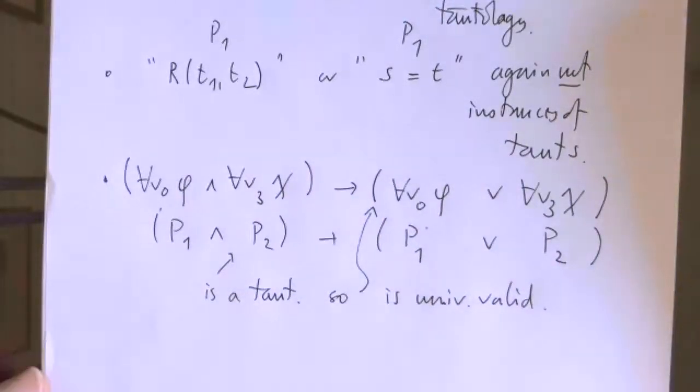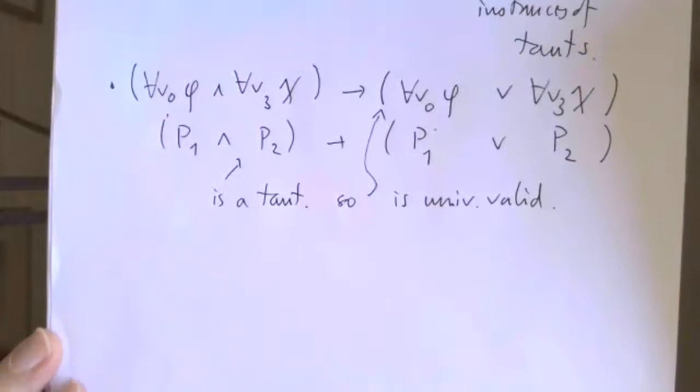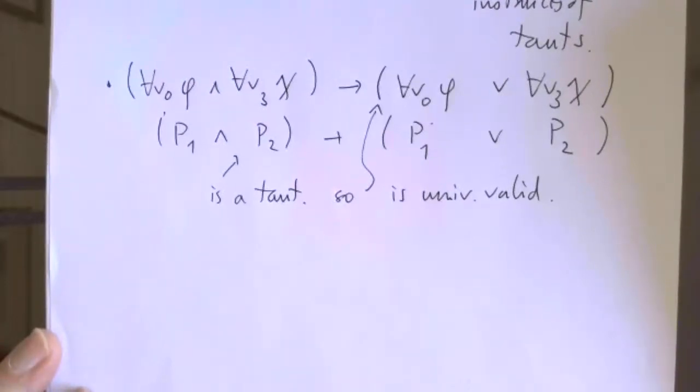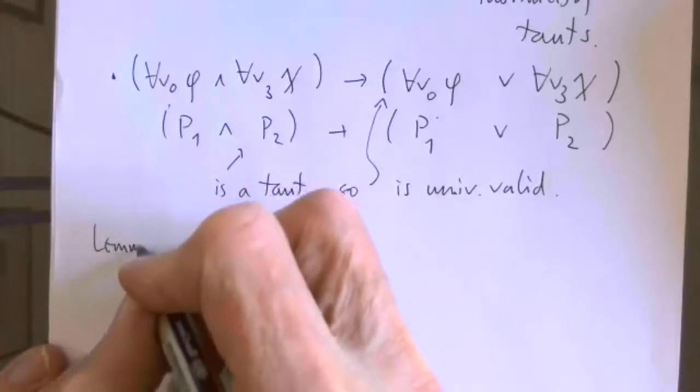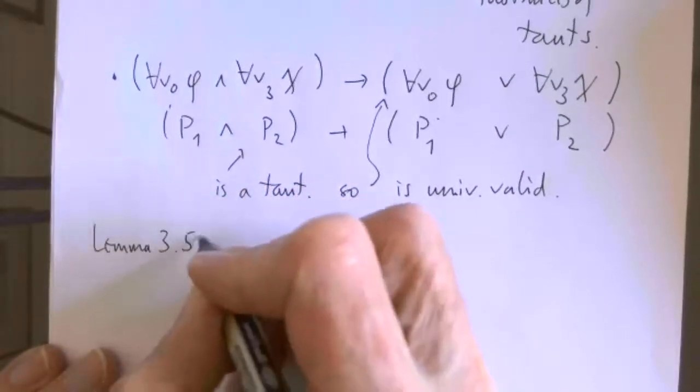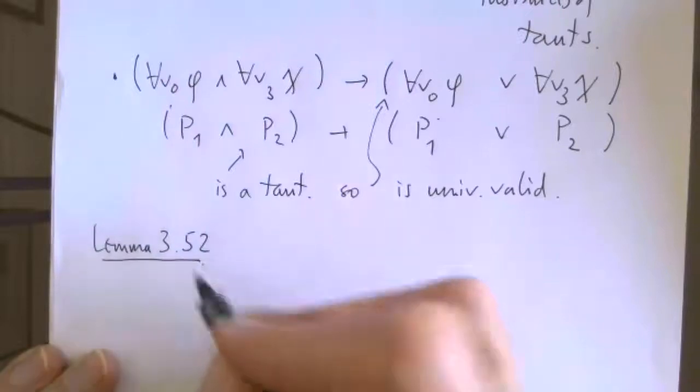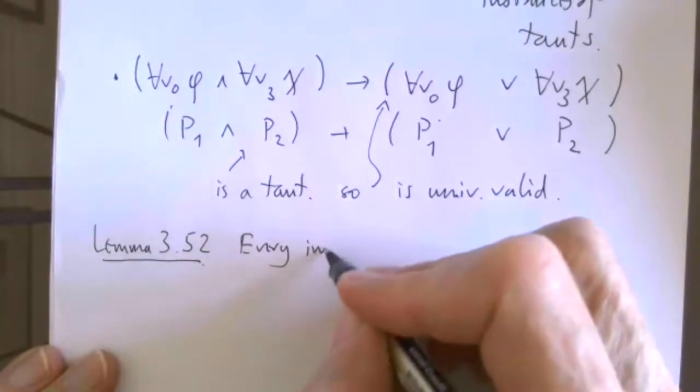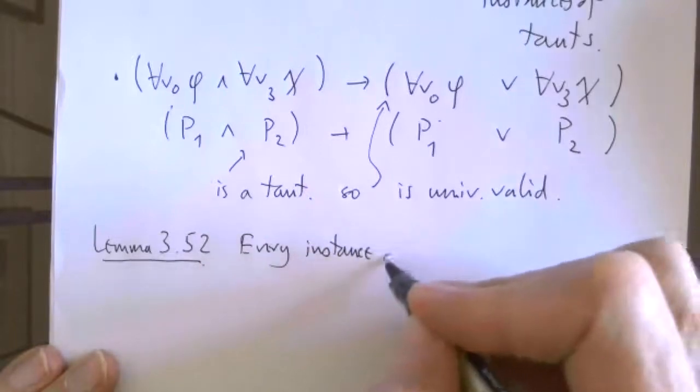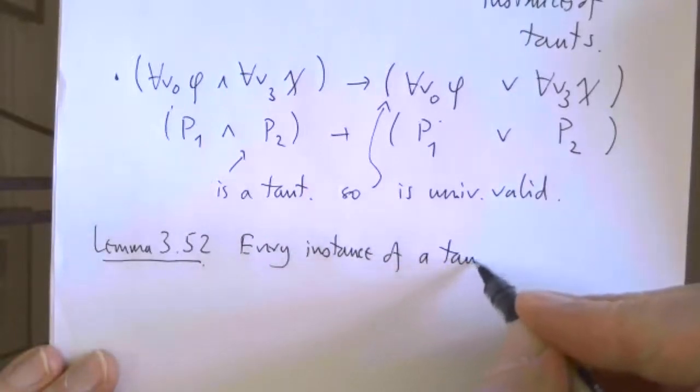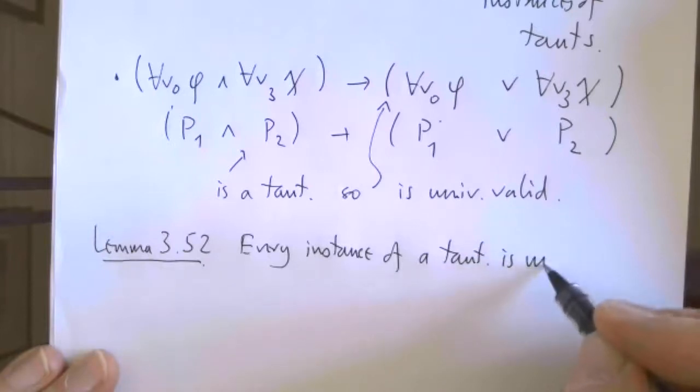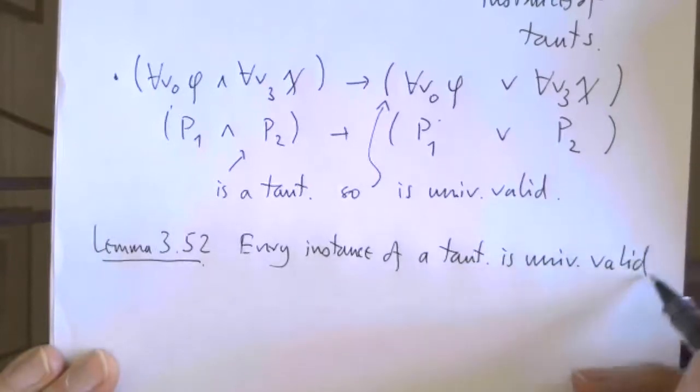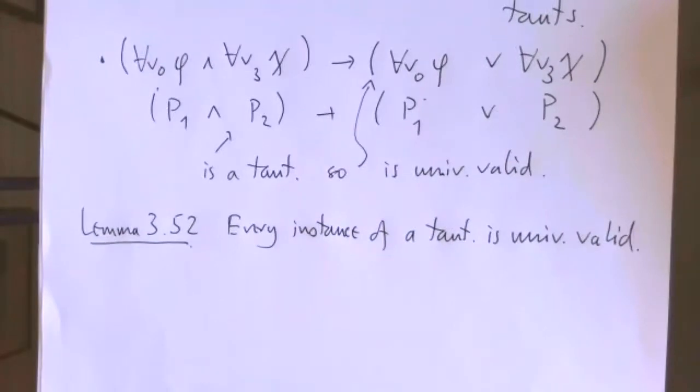The take-home message is Lemma 3.52, page 15. Every instance of a tautology is universally valid, and I've tried to indicate on the board why that's the case. There's a proof given but I'm going to skip it.